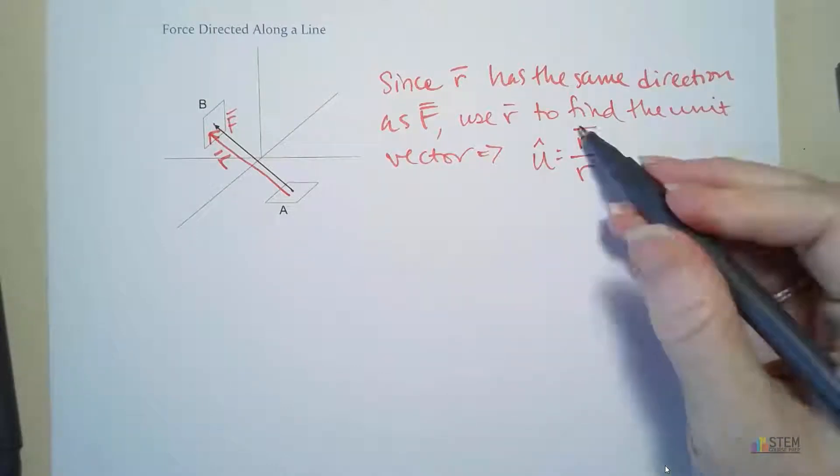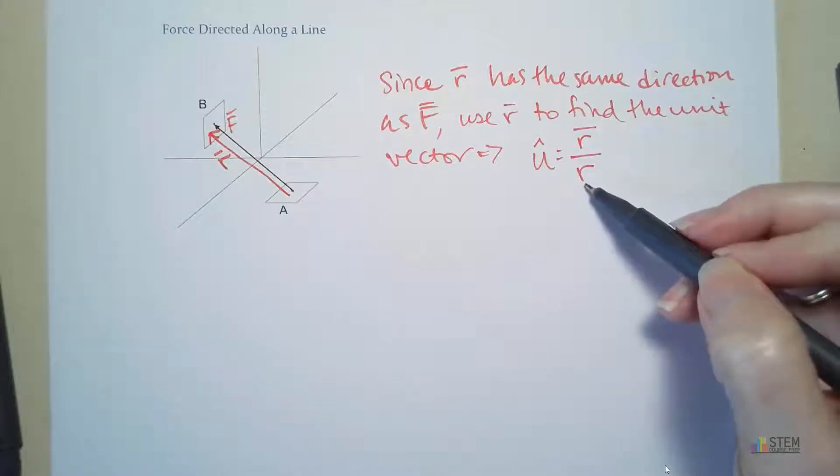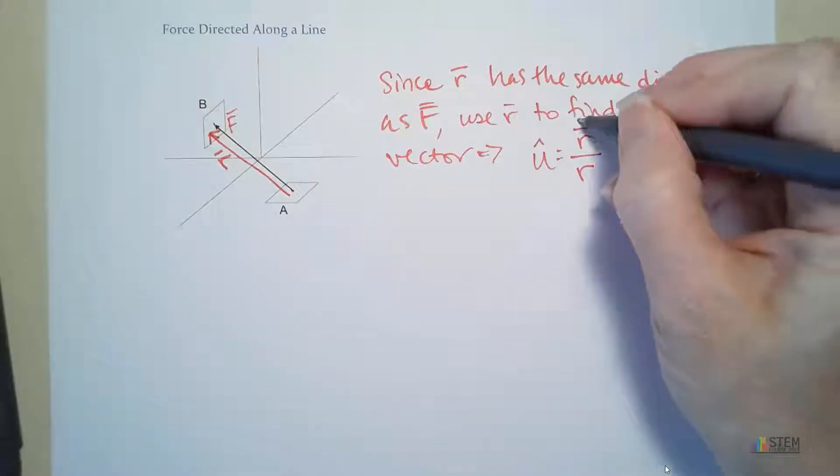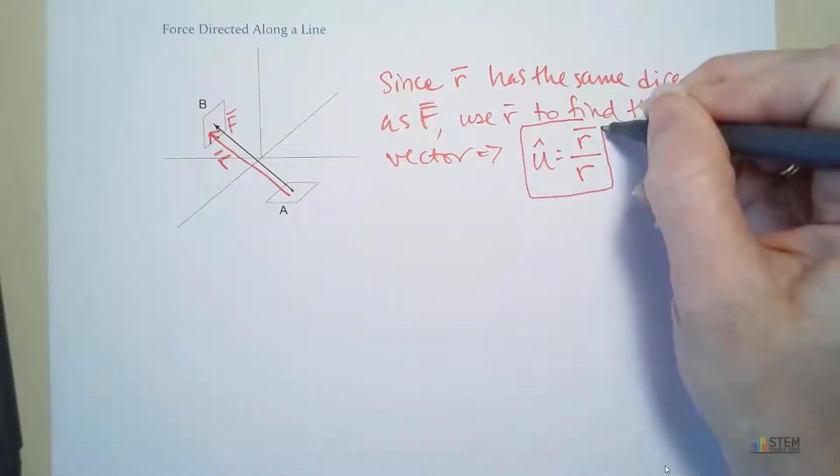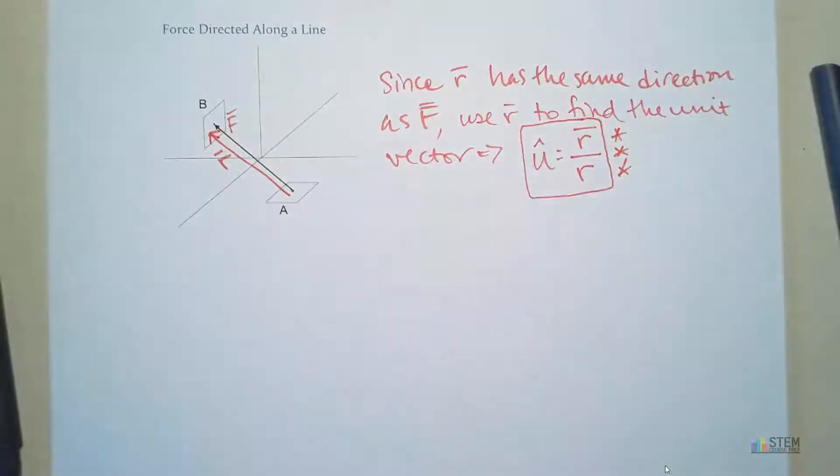So that's how we're going to find our unit vector. We're going to find the position vector, put it over the magnitude of the position vector. So this is going to be an equation here that you definitely want to know. We'll use it over and over and over again. So let's put some stars by that one. It's going to be important.